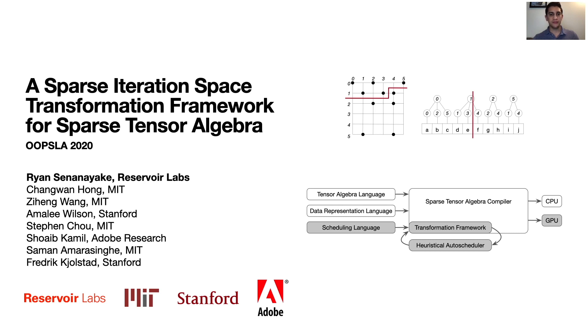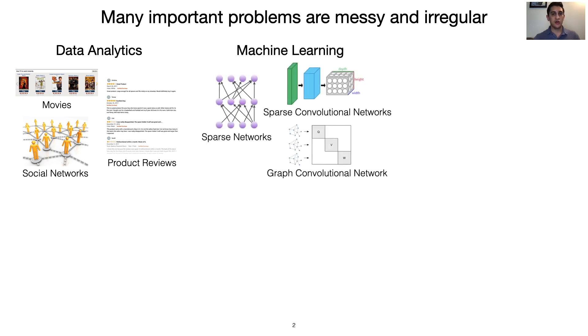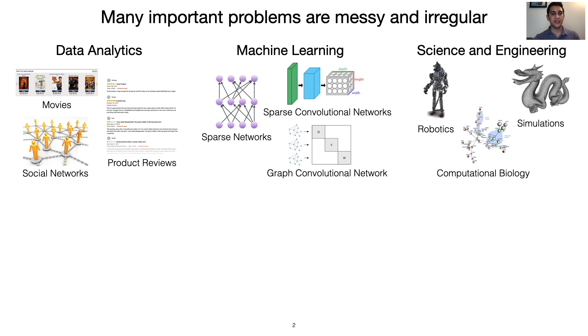But first, I'll argue why. Problems in many domains, such as data analytics, machine learning, or science and engineering, are messy and irregular. These problems require representations that reflect this irregularity.